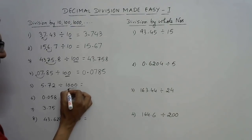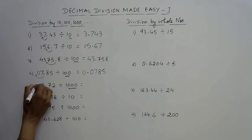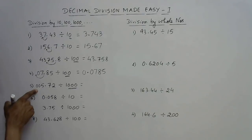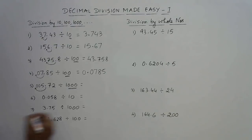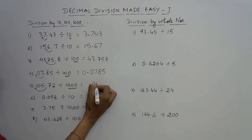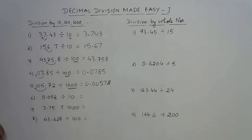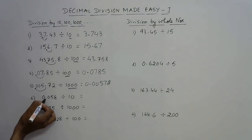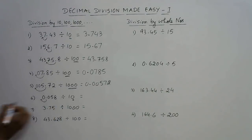For division by 1000, we move three decimal places to the left. We have only one digit before the decimal, so we need to put two more zeros to account for three digits. The decimal then moves three digits left, giving us 0.00072 as the quotient. You can put a zero before the decimal — it won't make any difference. Likewise, dividing by 10 with zeros follows the same logic.